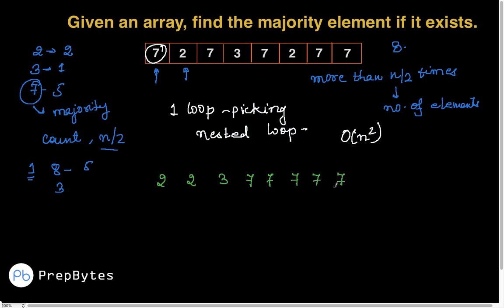After sorting the array, it looks like: 2, 2, 3, 7, 7, 7, 7, 7. If the majority element has count greater than n/2, then the mid element must be the majority element. So I just have to check whether the mid element is a majority element by counting its frequency. If the frequency is greater than n/2, that is the majority element; otherwise, there is no majority element.